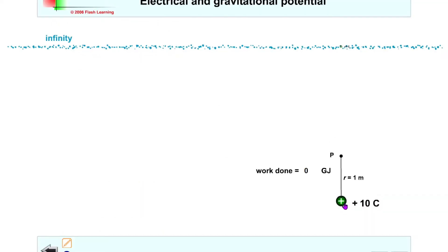So imagine we've got a point charge of plus 10 coulombs here and we've got another small point charge of plus 1 coulombs at infinity away from that. So it's a very large distance away from it. And then we can see what happens when we bring this positive point charge close to our bigger charge of plus 10 coulombs.